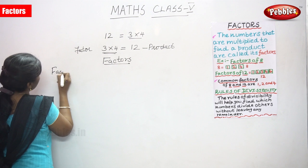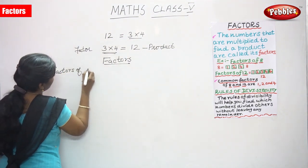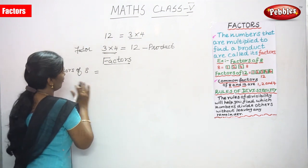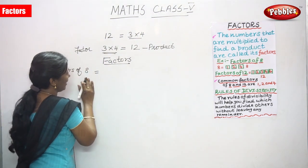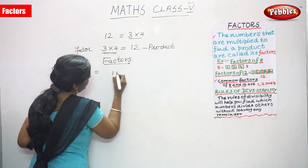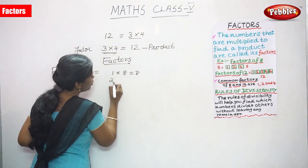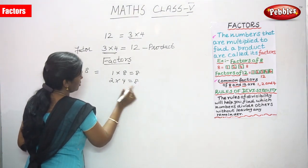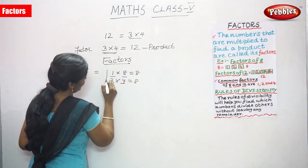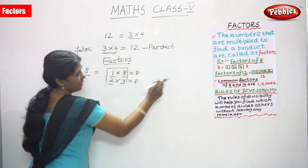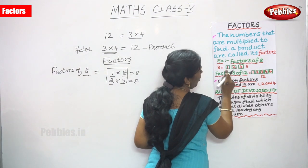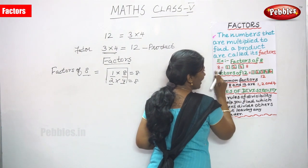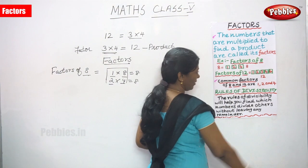We will find the factors of 8. With the help of the multiplication table, we will find the factors of 8. First, we start with the tables: 1 into 8, you can get 8. 2 into 4, you can get 8. So these are the factors. 1, 2, 4, and 8 — these are called the factors of 8. What are the factors of 8? 1, 2, 4, 8.